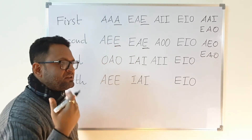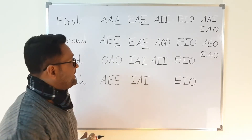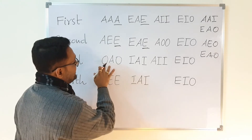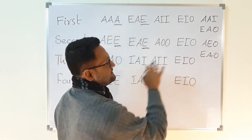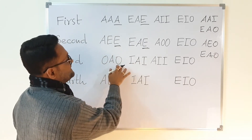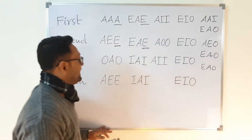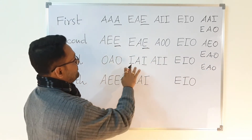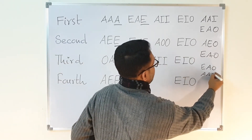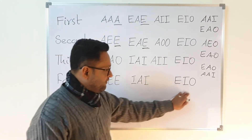There is another way: if there is a particular proposition in the premise, you can further strengthen it. For example, if OAO is valid then EAO will also be valid. And if IAI is valid then AAI will also be valid. So this is another way of finding additional valid syllogisms.